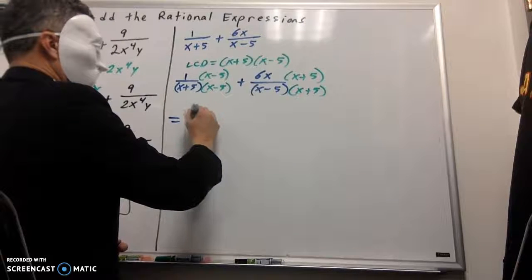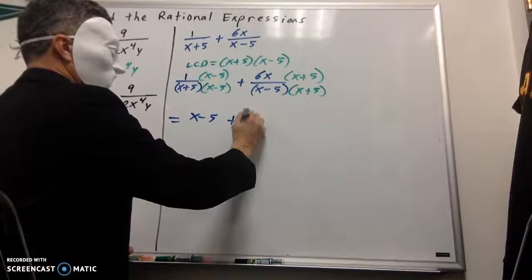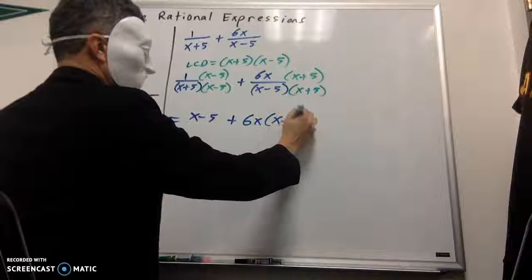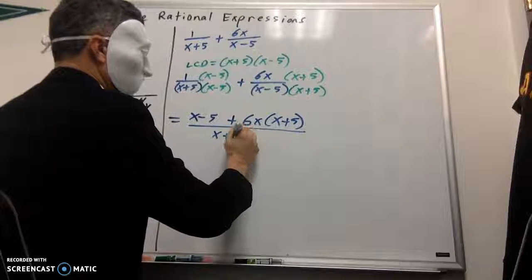Numerator. We've got x minus 5. I'm going to bring down this plus sign. And here I've got 6x times the quantity of x plus 5 and it's all over x plus 5 x minus 5.